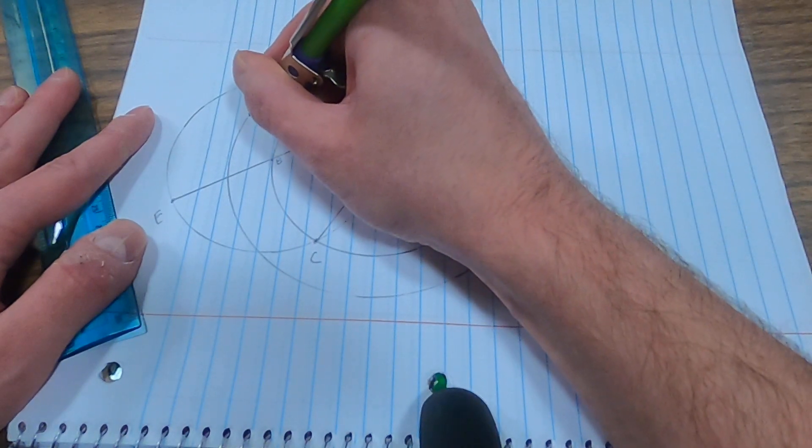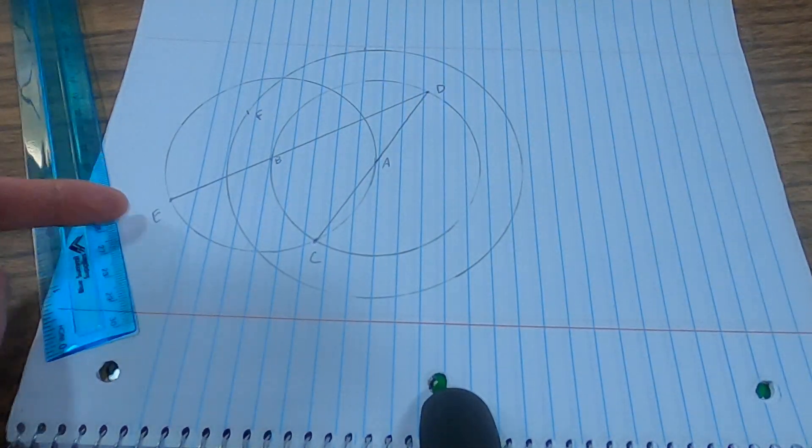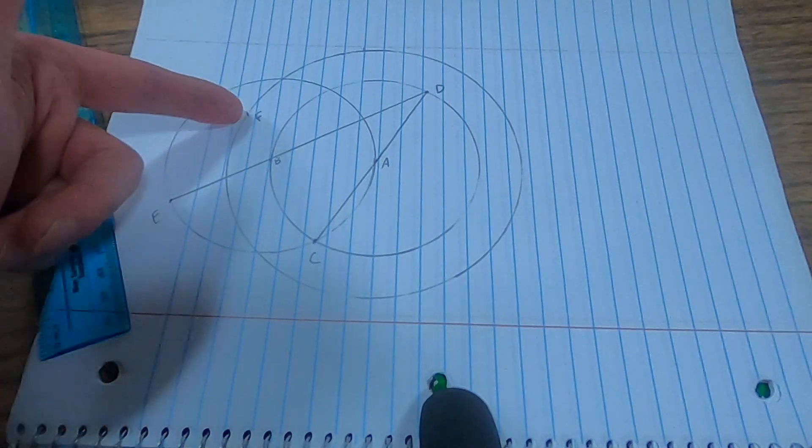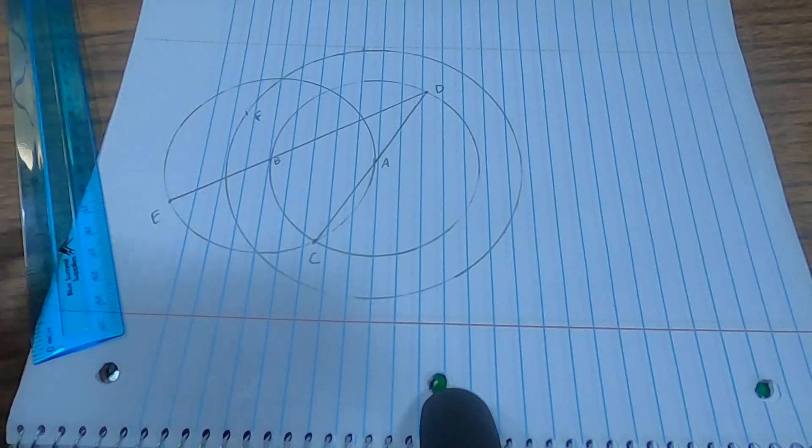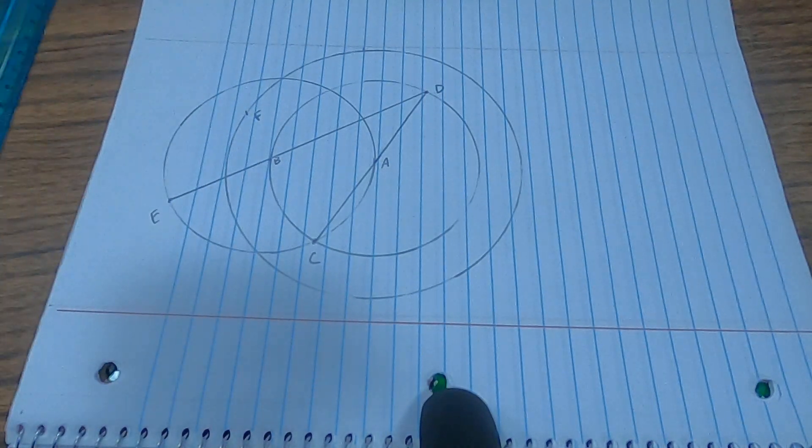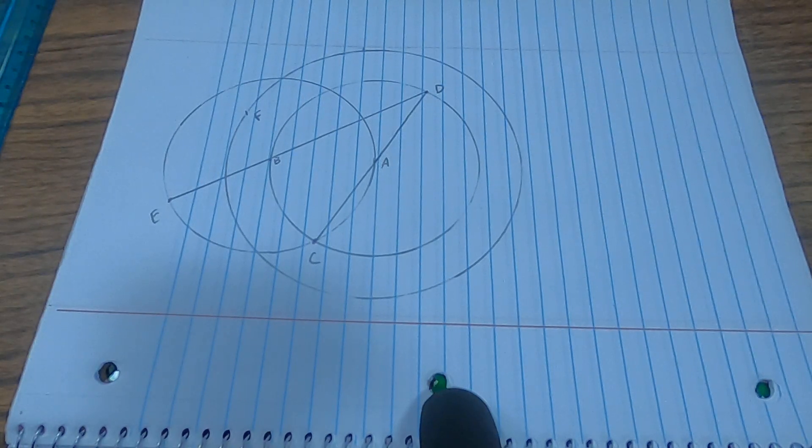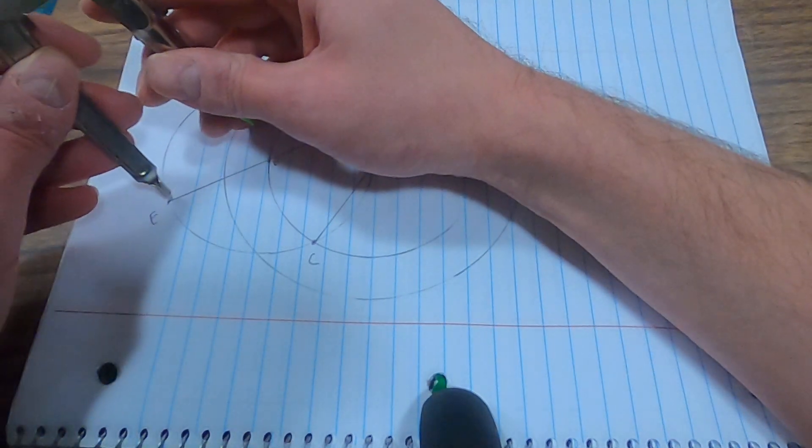Now, we're almost done here because the segment EF is going to be the length of every side of my regular pentagon that we're constructing. So I'm going to take my compass and set it equal to that length, EF.